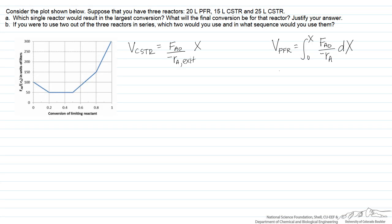For example, if we're going to determine what conversion we can achieve in a 15-liter CSTR, then we set 15 liters as the volume and find the value of x such that x times FA0 over negative rA at the exit equals 15 liters. This involves a trial and error procedure. If we pick a conversion of 30%, we can read off the plot that FA0 over the reaction rate equals 50, and so 0.3 times 50 liters equals 15 liters. Therefore, the 15-liter CSTR gives us a conversion of 30%.